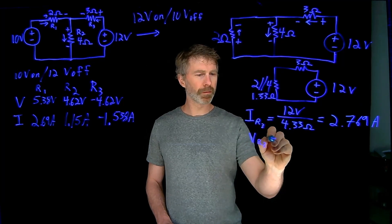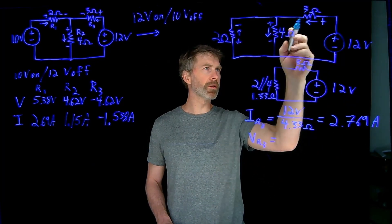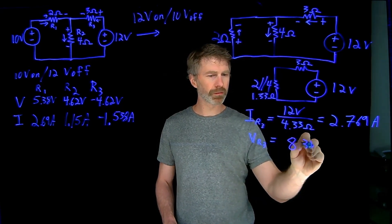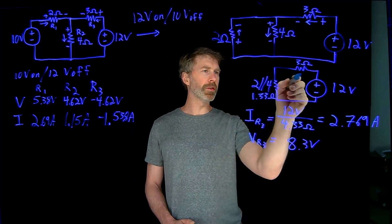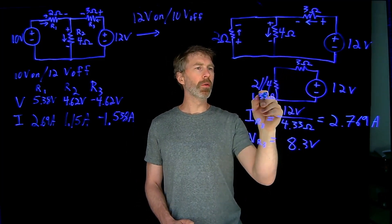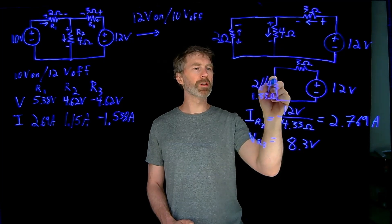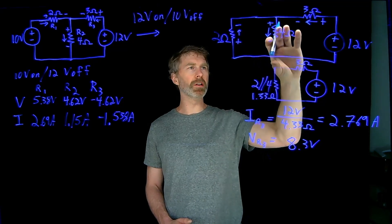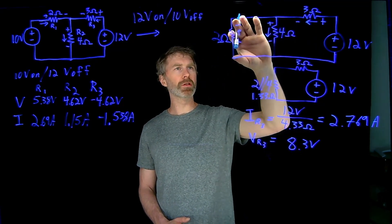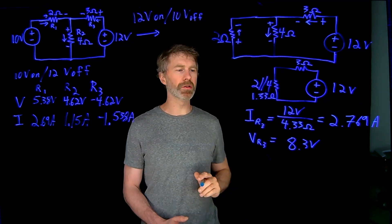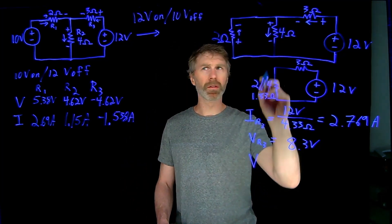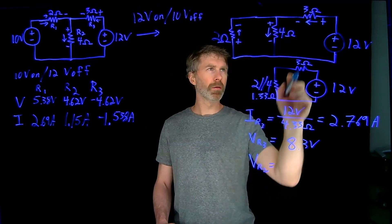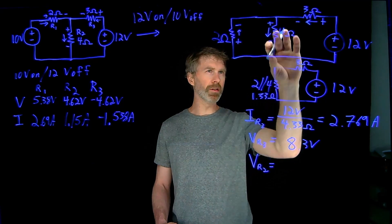The voltage across R3 is that current — 2.769 amps — times 3 ohms, which works out to 8.3 volts. Now, with 8.3 volts across the 3-ohm resistor, whatever is left over is the voltage across the parallel combination — that is, the voltage across the 4-ohm resistor and the 2-ohm resistor.